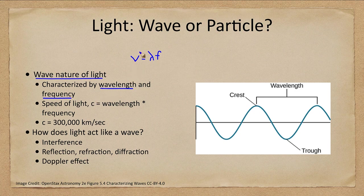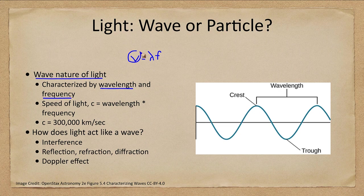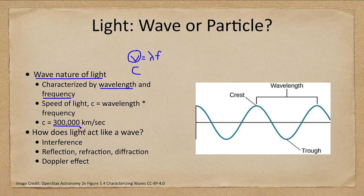So if you know the velocity and you know either wavelength or frequency, you can calculate the other. For light, this is a constant. This is c, the speed of light, which is 300,000 kilometers per second.